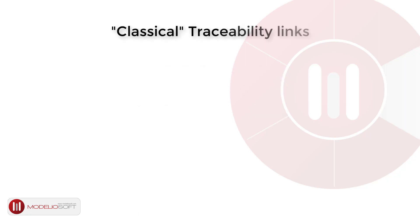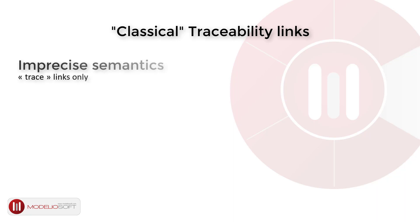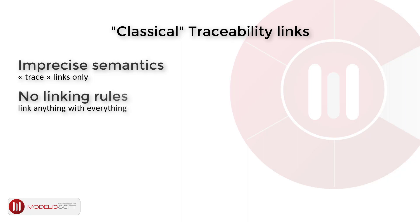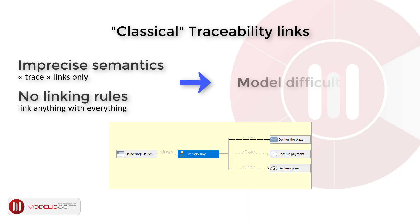Historically, traceability was brought by imprecise, untyped links. Their vague semantics — all links were named 'trace' — and lack of linking rules, where anything could be linked to everything, made it impossible to get a precise model.